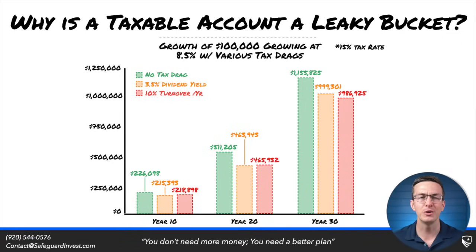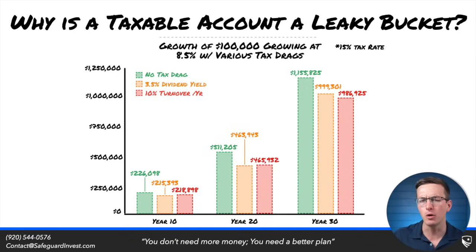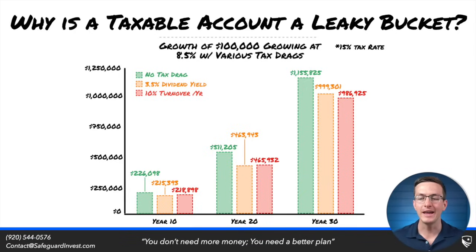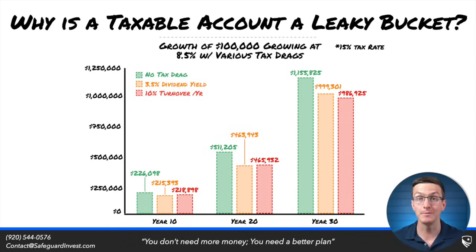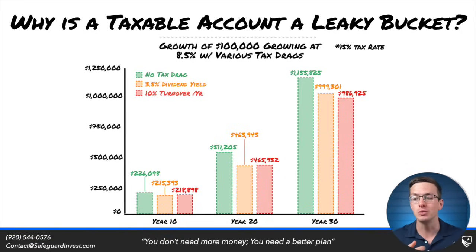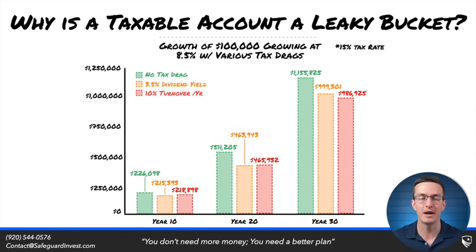The first thing you'll notice is there's a gap in value between the investment with no tax drags and the other two options. With a taxable account, anytime a dividend is paid or you turn over part of your account, there is a taxable event. Anytime taxes are paid, you're reinvesting less because you have to take money out to pay those taxes, and thus you're hurting compounding.